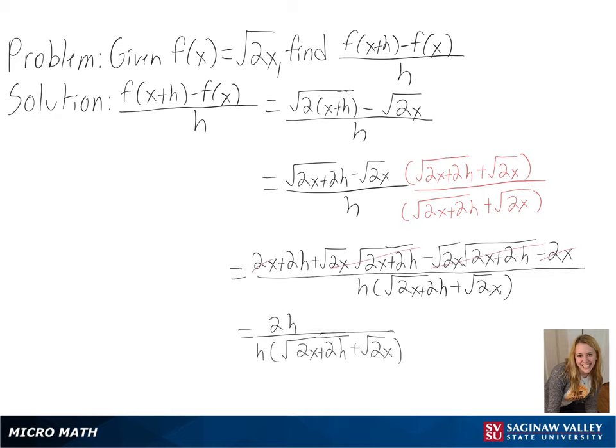Finally, we can cancel out our h's, and we are left with 2 over the square root of 2x plus 2h plus the square root of 2x as our final answer.